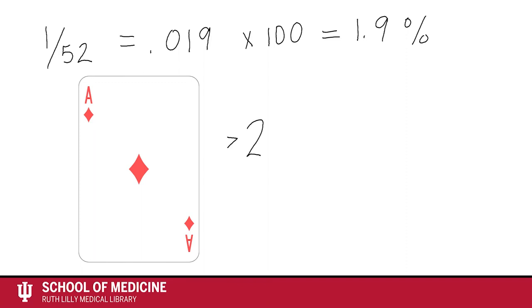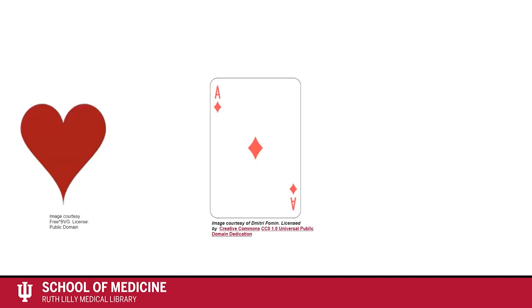That equals .019 times 100, which equals 1.9%. In other words, there is less than a 2% chance or risk that you will pick the Ace of Diamonds out of a deck of 52 cards.